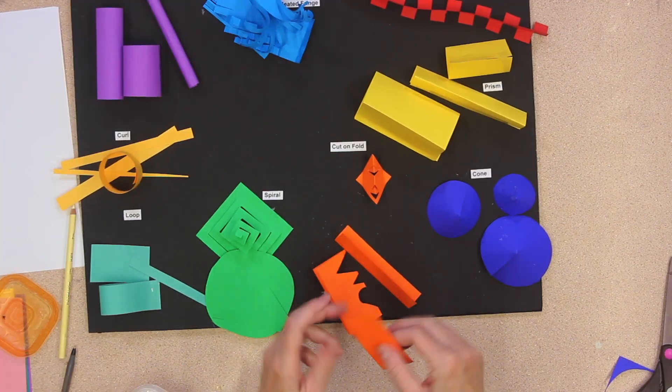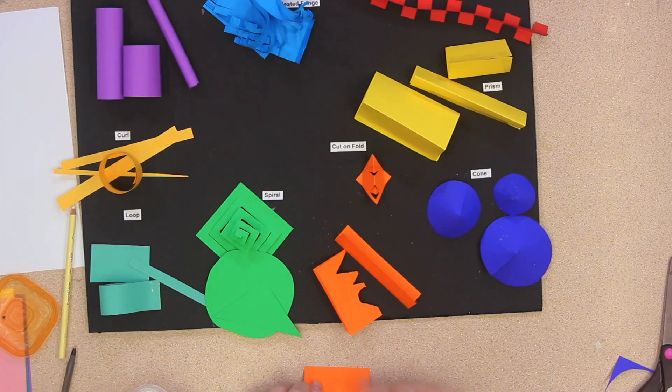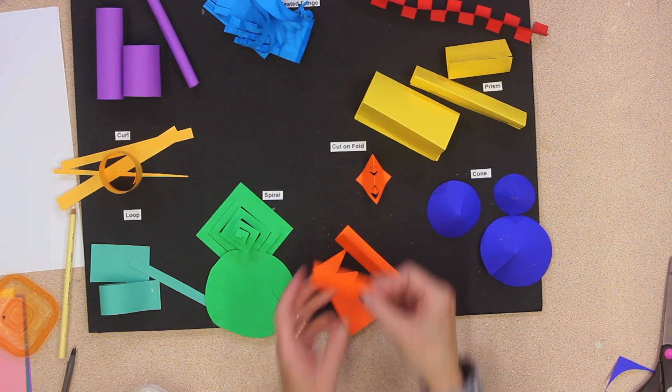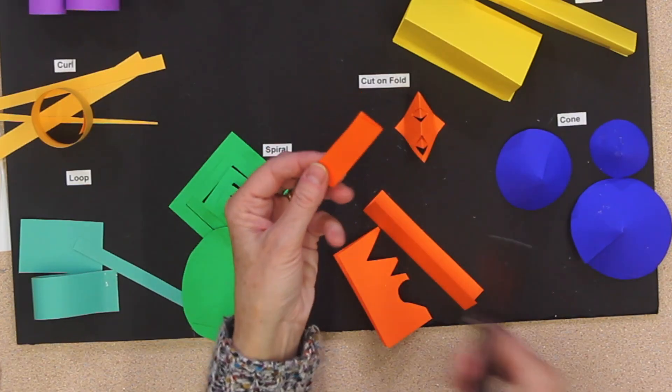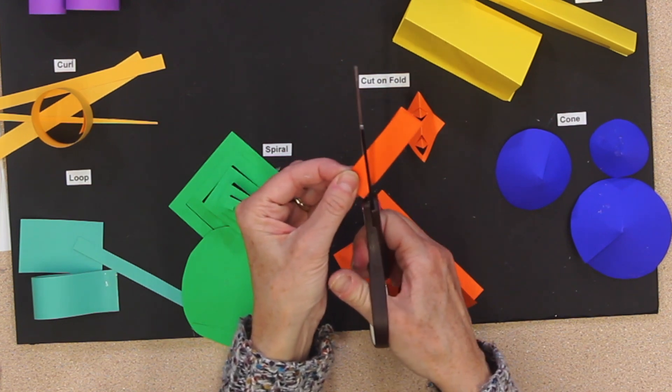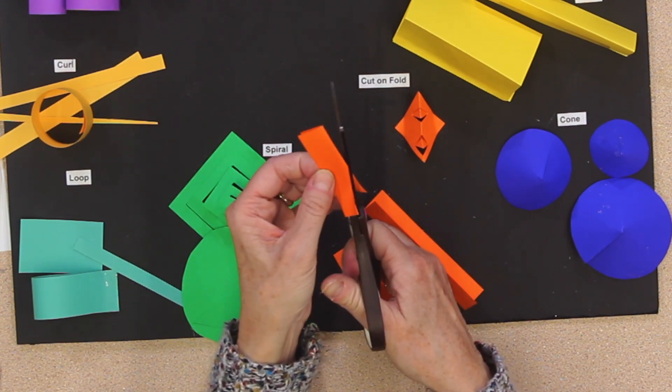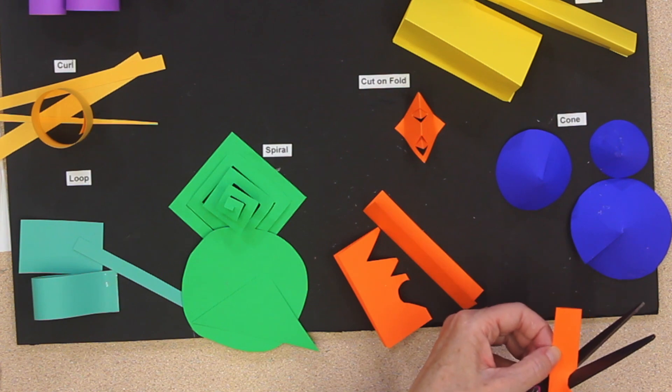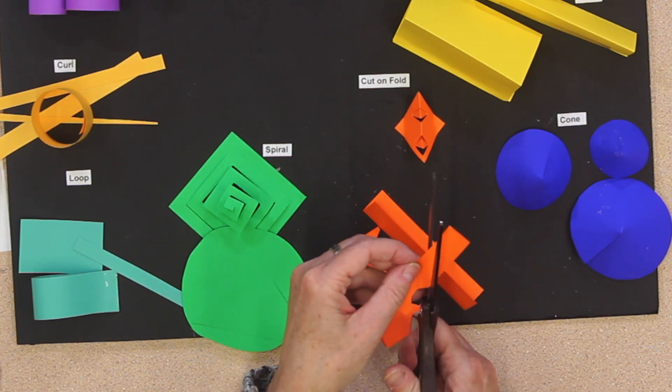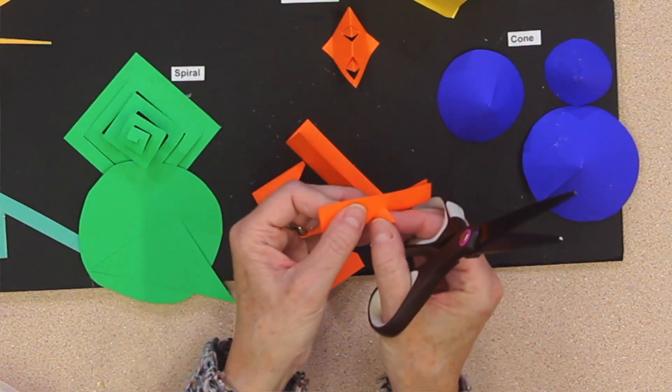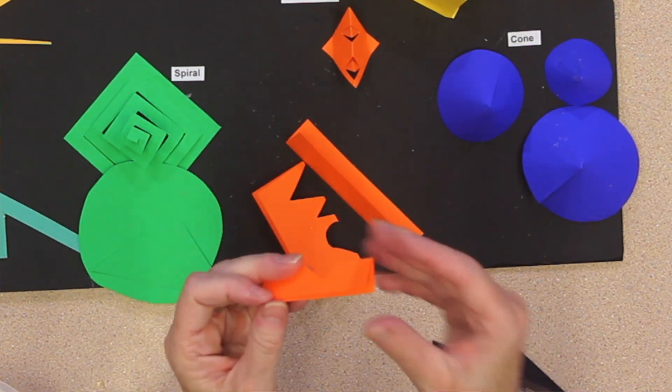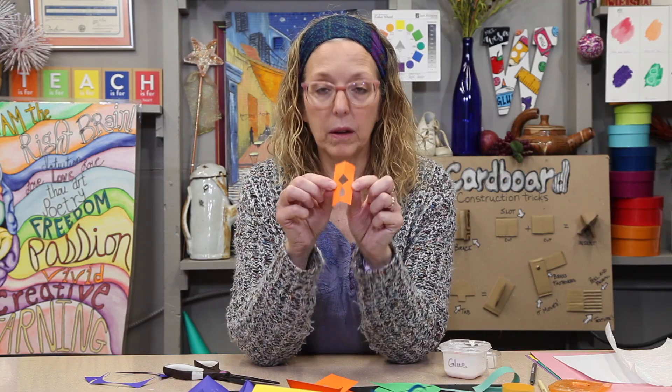And cut on fold. All you do is you fold your paper in half and cut either something round or triangle however you want. And then when you open it up, you've got cuts on fold.